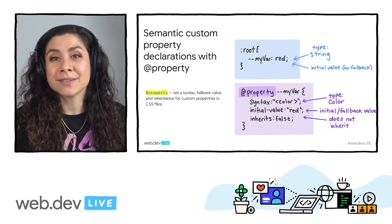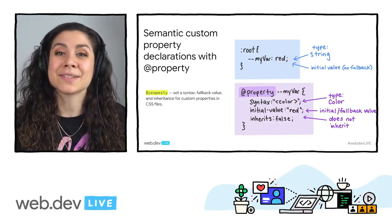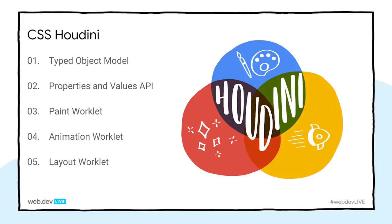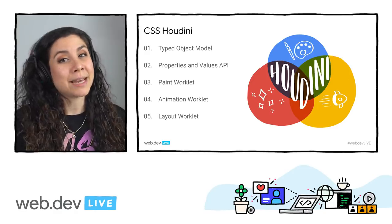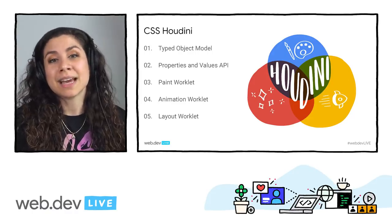The @property rule is also available behind a flag in Canary, and it's something I'm particularly excited about because it allows for semantic variables in CSS. With @property, you can declare CSS custom properties that have semantic typed values and fallbacks. This is part of the CSS Houdini effort — specifically the Properties and Values API — and previously was possible in JavaScript with CSS.registerProperty, but the @property declaration brings this into our CSS files, giving a nice co-location of superpowered styles. Other Houdini APIs to keep an eye out for are the Typed Object Model, the Paint Worklet, Animation Worklet, and the Layout Worklet.